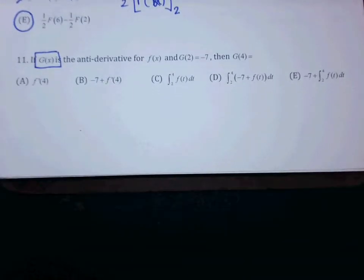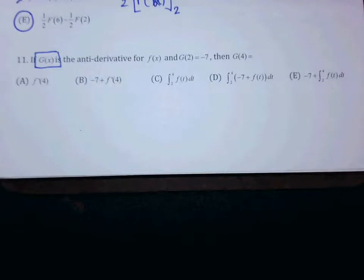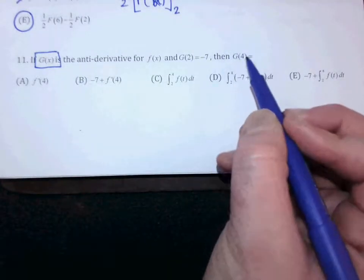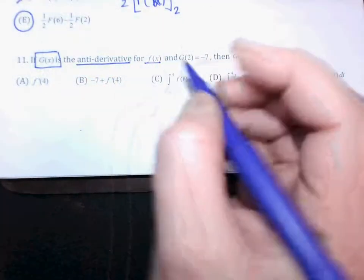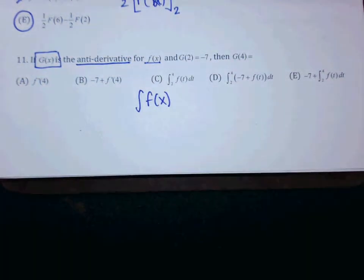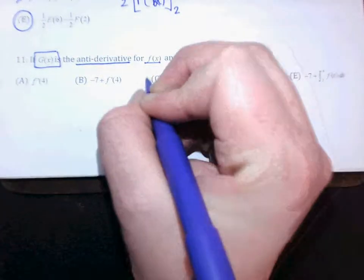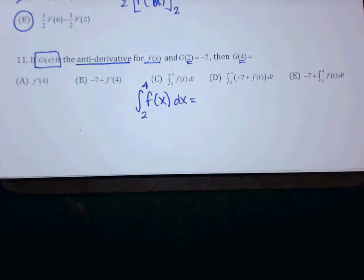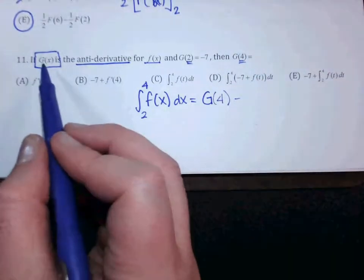G is the antiderivative. G of 2 — which in our heads is really capital F of 2 — equals negative 7. Then what is G of 4? Let's think outside the box. We want the integral of f from 2 to 4 dx. Normally I'd call the antiderivative capital F, but what am I calling it this time? Capital G. So I'd have capital G of 4 minus capital G of 2.